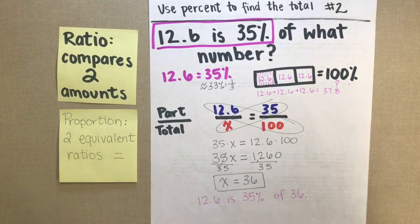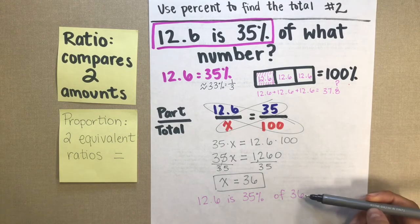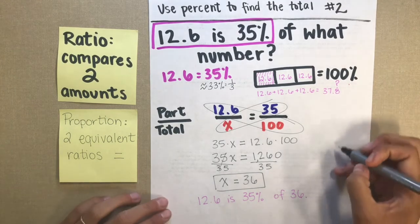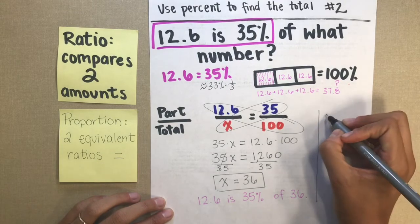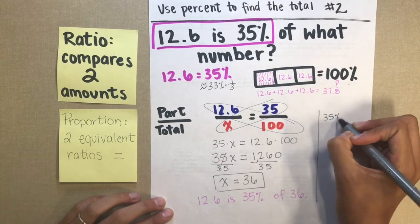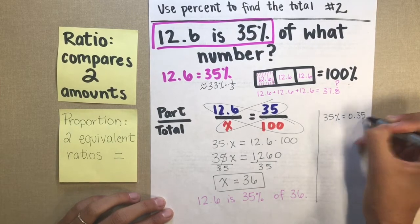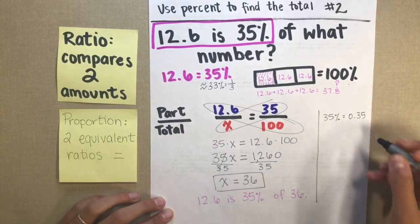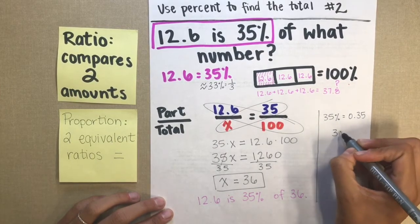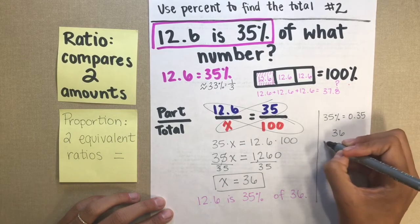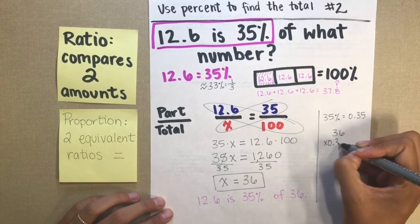If you wanted to check your work really quickly, all you need to do is take 35. I'm going to turn 35% into a decimal. And then all I need to do is multiply 36 times 0.35.